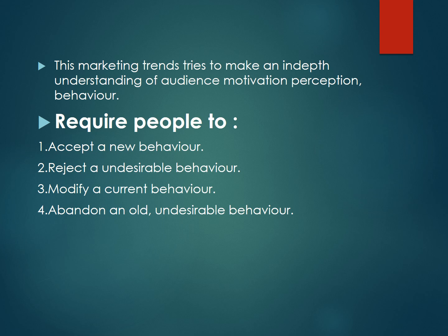The fourth goal is to abandon an old or undesirable behavior. For example, if a person has a habit of taking excessive alcohol, social marketing will try to eliminate or reduce that drinking habit, thereby bringing a behavioral change in the targeted audience.